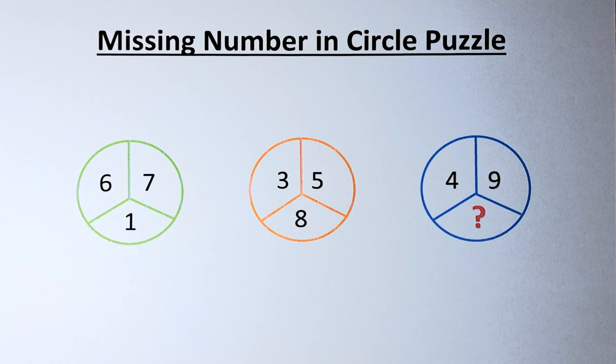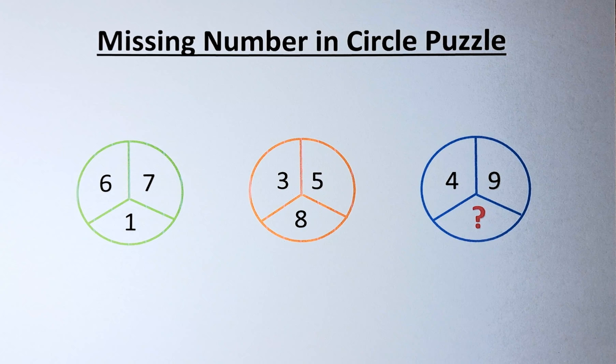In the orange circle, we have 3, 5 and 8. And in the blue circle, we have 4, 9 and a question mark.